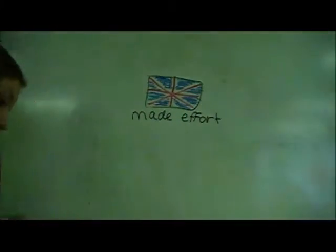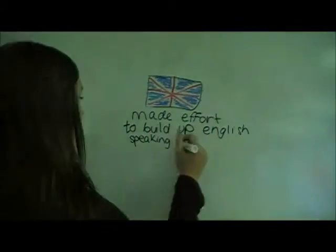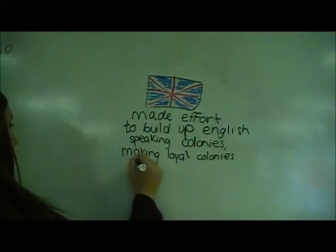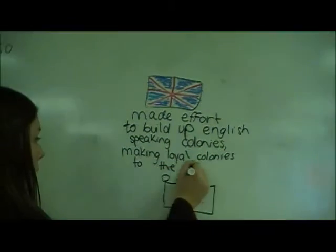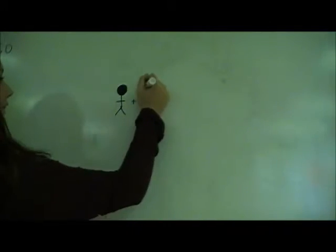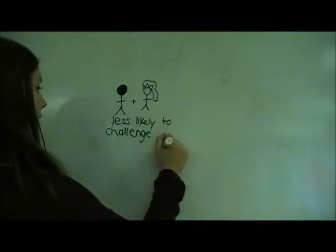The British made an effort to build up English-speaking colonies because they wanted colonies loyal to the British crown. The Loyalists, including the First Nations and the African Americans, seemed less likely to challenge the crown.